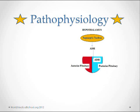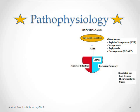ADH is commonly known as arginine vasopressin, or AVP, vasopressin, argipressin, desmopressin, or DDAVP. The stimulus for ADH is low volume or increased osmolarity. It is also secreted in response to stress.